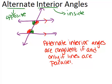So if two lines are parallel — if these lines were marked as parallel — then I would know for sure that these alternate interior angles are congruent. The other way around is also true: if I knew that these two alternate interior angles were congruent, that would mean the lines have to be parallel, even if they're not marked that way.